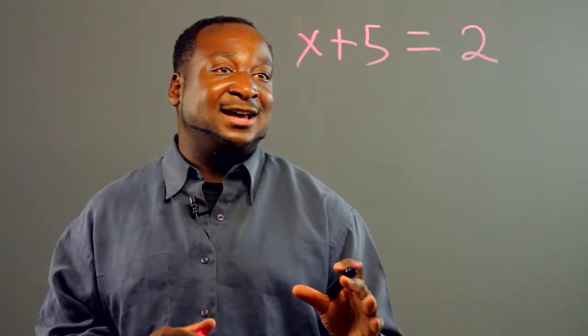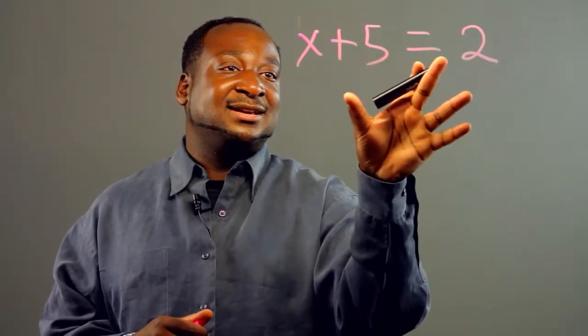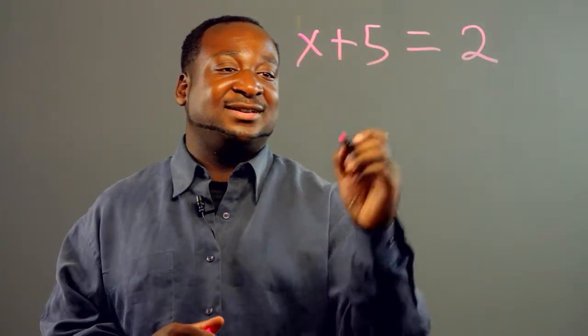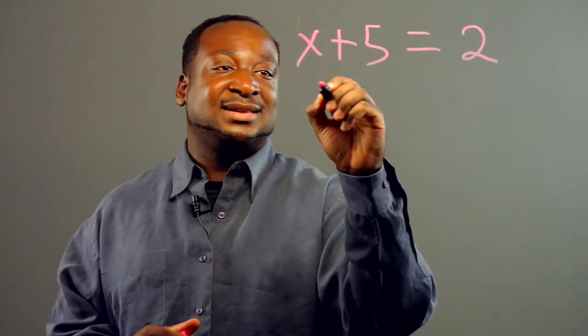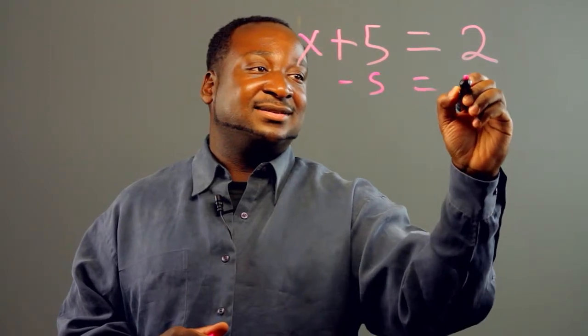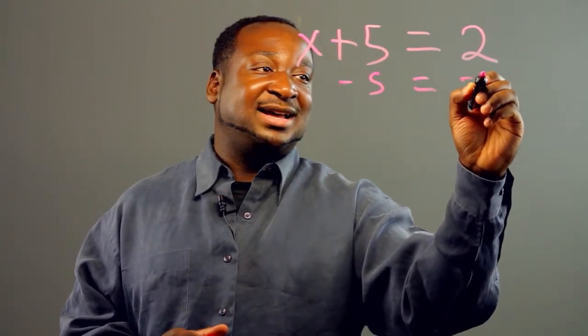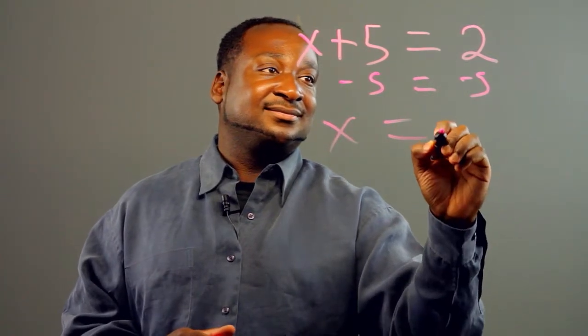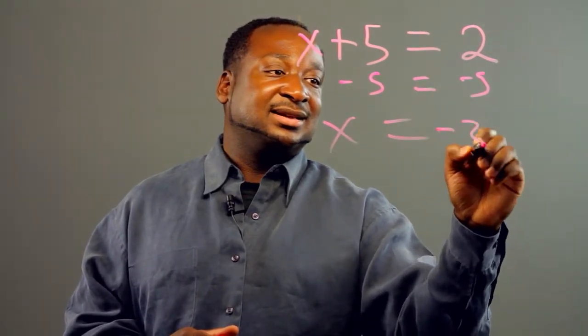And in this case, we can subtract both sides by 5. So we get a minus 5 and a minus 5. So x equals negative 3.